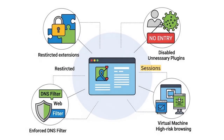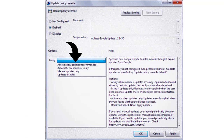Strengthen your browser hygiene: restrict extensions, disable unnecessary plugins, enforce DNS and web filtering if you can, and isolate high-risk browsing in sandboxes or VMs. If you manage endpoints, push a group policy update forcing Chrome's auto-update, and try to automate the update process if you have multiple endpoints.